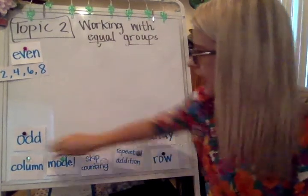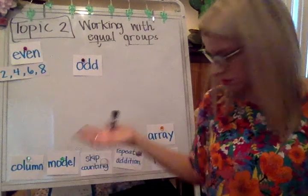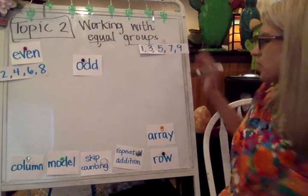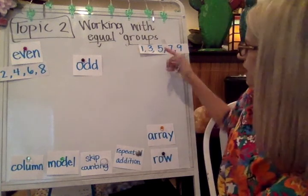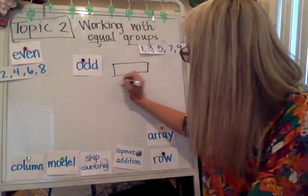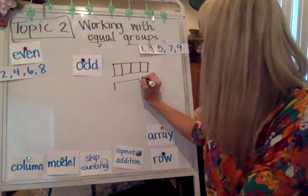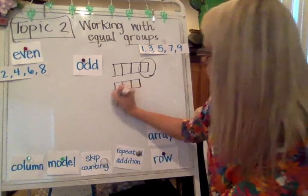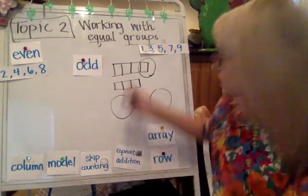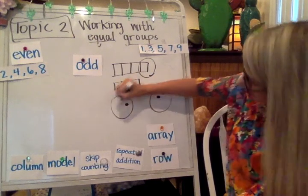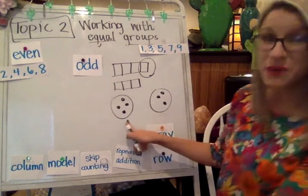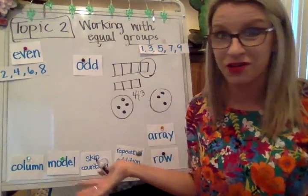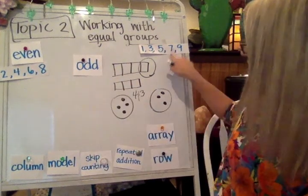We're going to talk about the word odd next. Odd numbers end with a ones-place digit of one, three, five, seven, or nine. So if you were going to try to put like seven cubes — one, two, three, four — and you had them lined up and wanted to see if they would make equal groups, they wouldn't. There would always be one left out. If you had seven strawberries and wanted to split them with two friends, one person would have four strawberries and the other would have three. Those are not equal because four and three are not the same number. They're considered odd — so the number seven is odd.